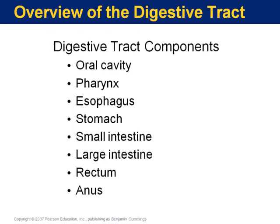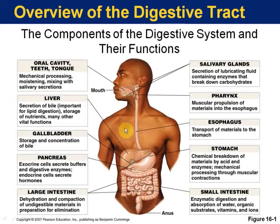You need to know the components and not only the components but their functions. This is pretty much the order in which food travels through the system. This is an excellent slide because it gives the overall major functions. We will detail in this PowerPoint some of the more detailed parts of these structures, but this is a good slide for understanding the general function of them.